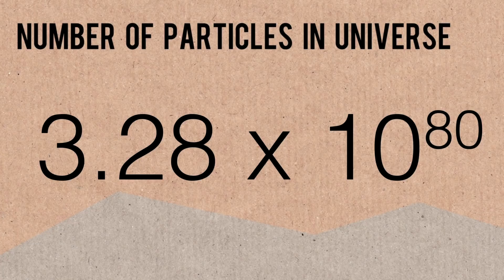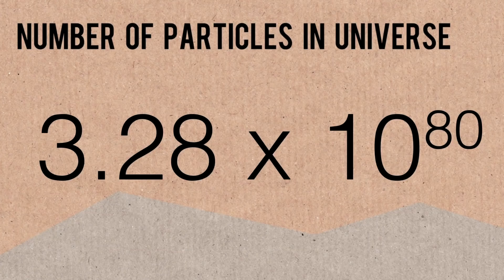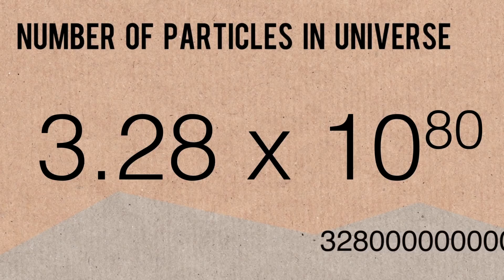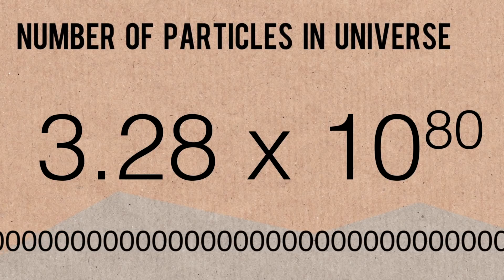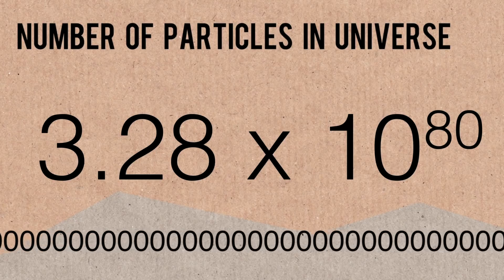So that's how many particles there are in the universe — 10 to the 80, one with 80 zeros after it. That's a big number, but the universe is a big place. It works out to about one particle every cubic meter, which is hardly anything. Most of space is empty space — not even one atom per cubic meter, just one particle.